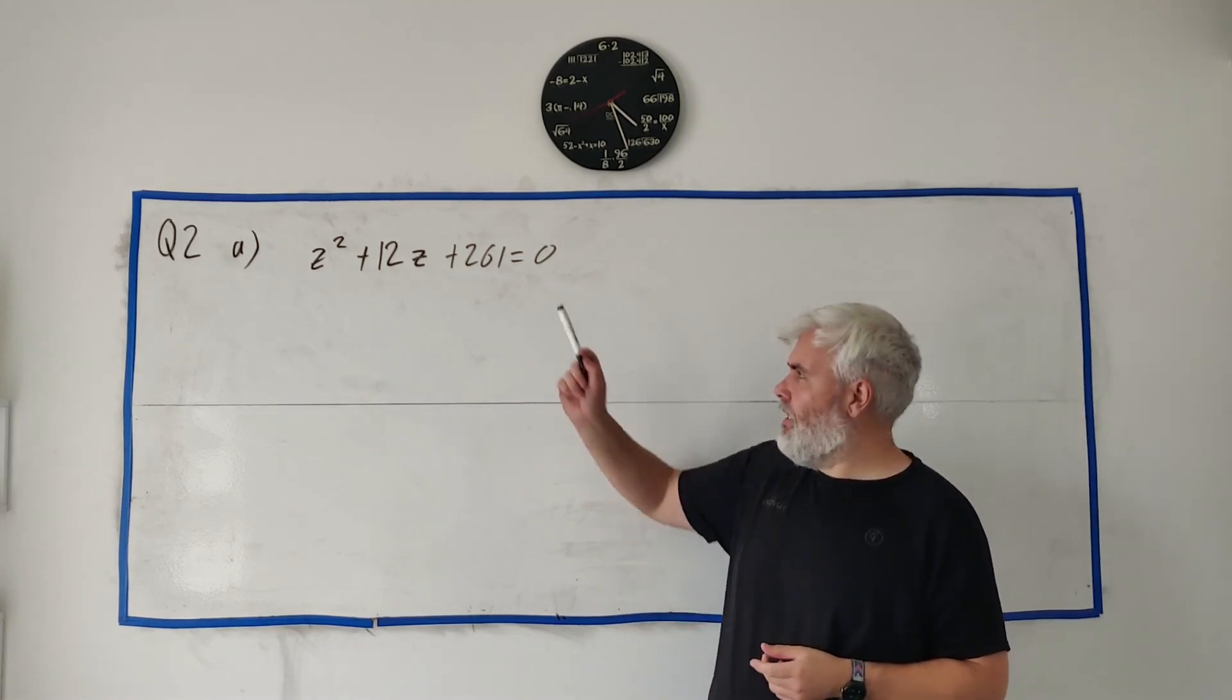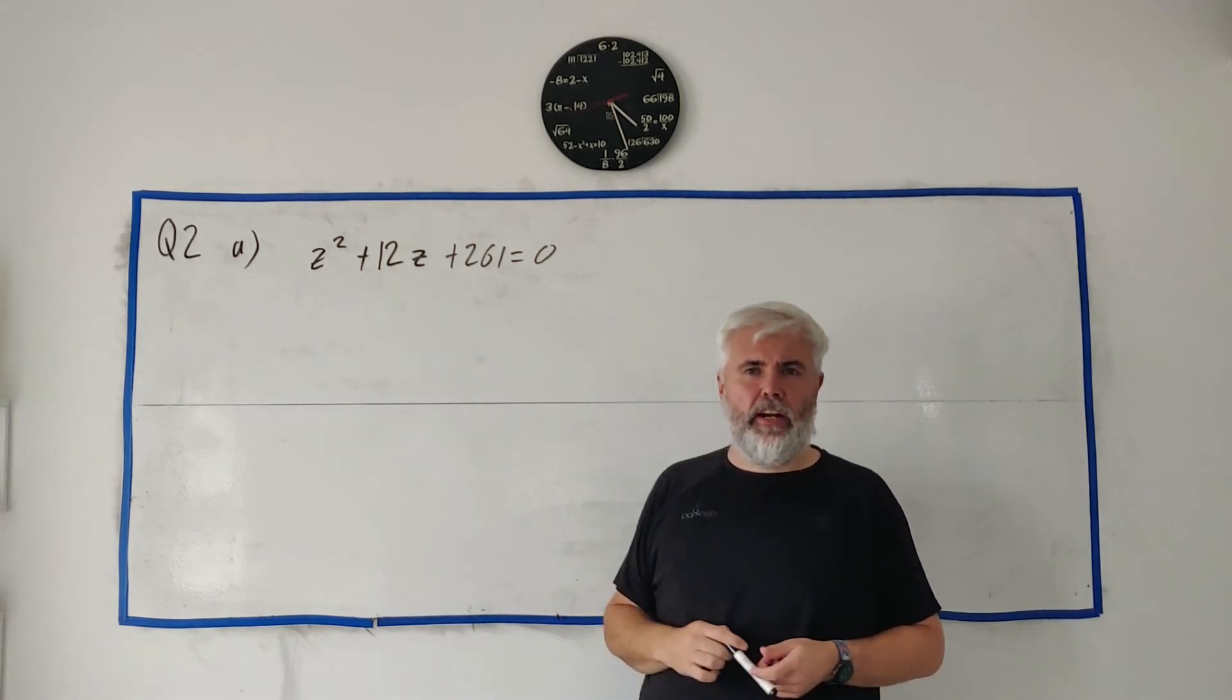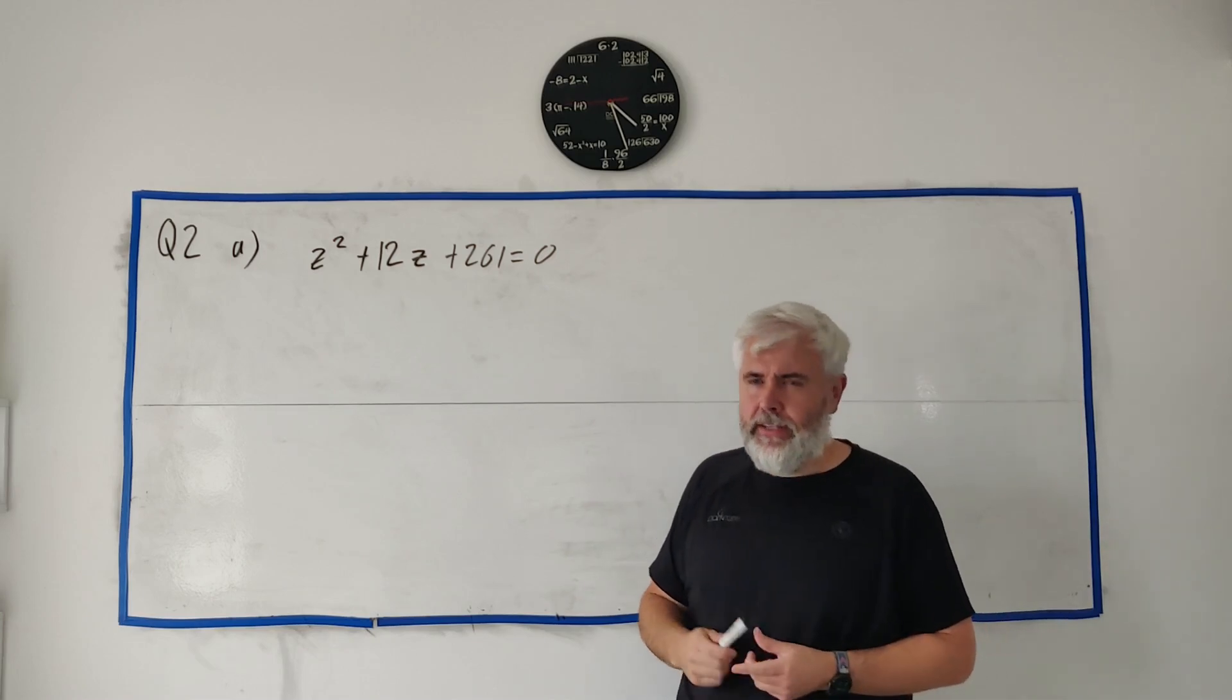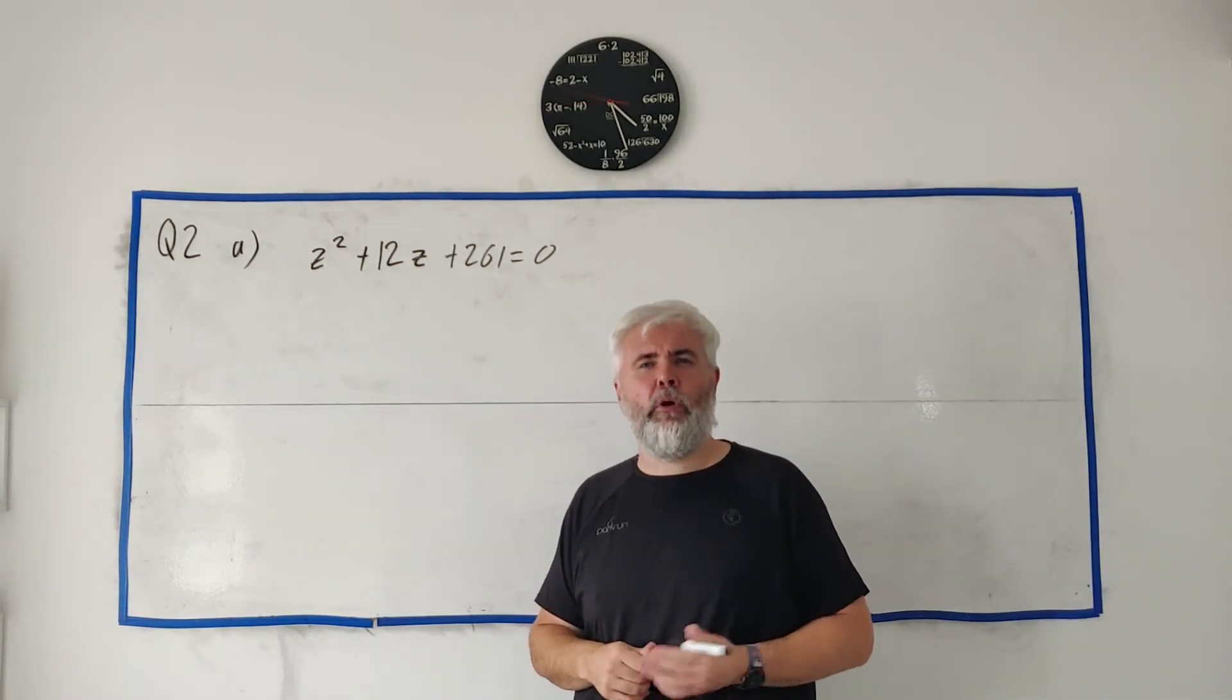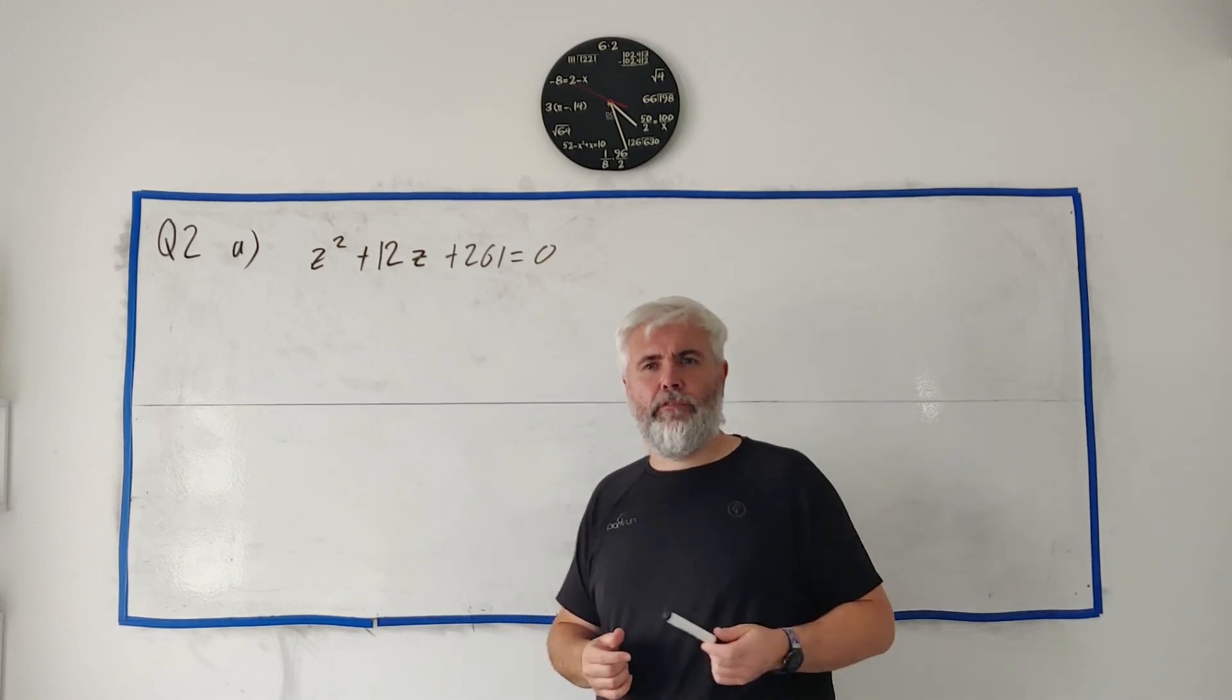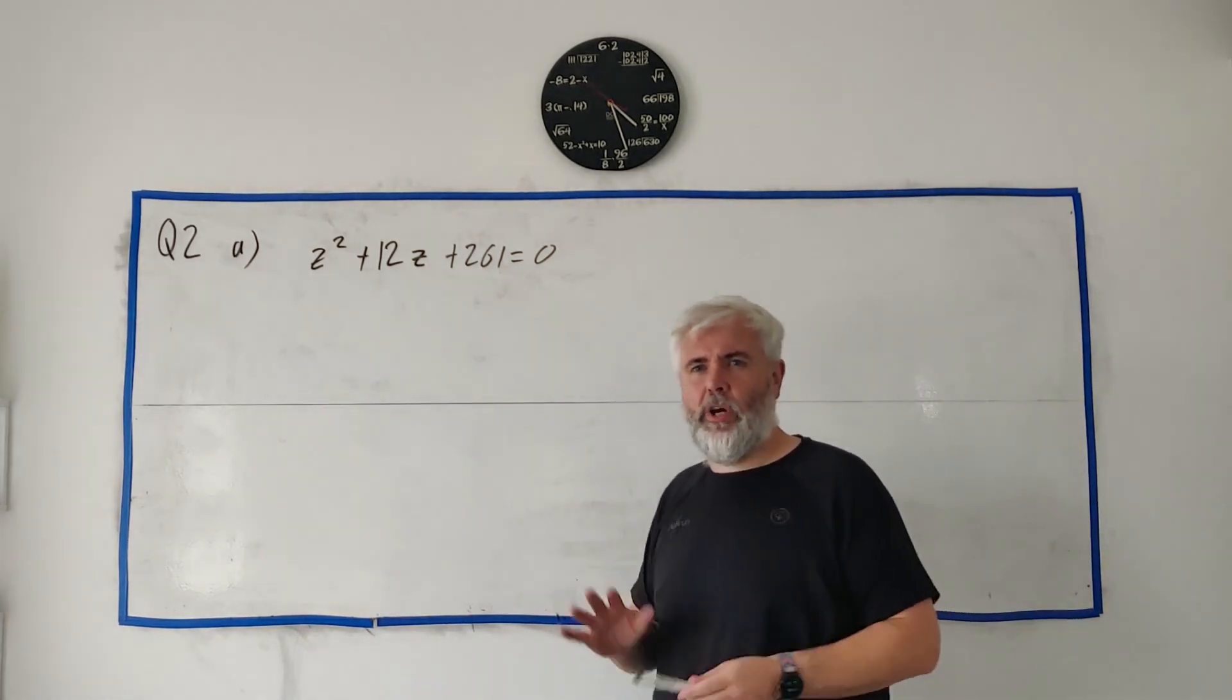In question two, it starts off, they give us a quadratic equation here, and ask us to find two solutions. They tell us the solutions are going to be complex, and they want us to write each of them in the form of A plus B times I. Quite common that.